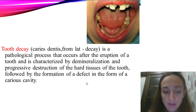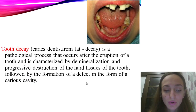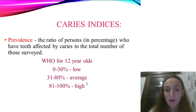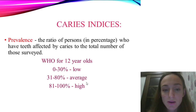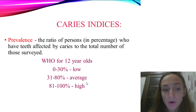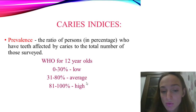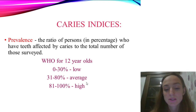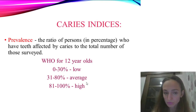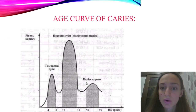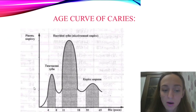The three indicators are: prevalence, intensity, and grounds of intensity. Prevalence is the ratio of persons who have teeth affected by caries to the total number of those surveyed. For 12-year-olds: 0–30% is low, 31–80% is average, and 81–100% is a high level.